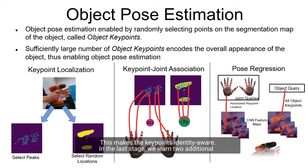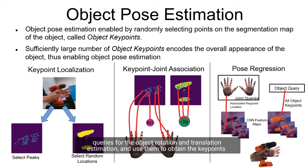In the last stage, we learn two additional queries for the object rotation and translation estimation and use them to obtain the keypoints necessary to estimate the object pose.